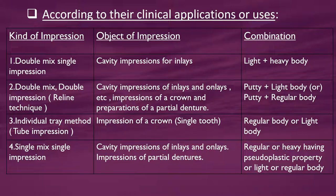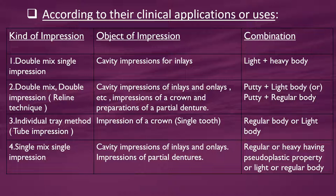Next, individual tray method (tube impression) — used for impression of a single crown, using regular body or light body. Single-mix single impression — used for cavity impressions of inlays and onlays and impressions of partial dentures, using regular or heavy body with pseudo-plastic property, or light or regular body.